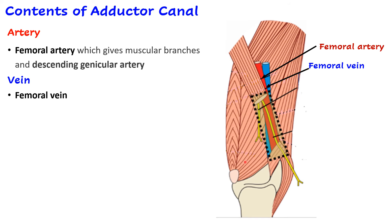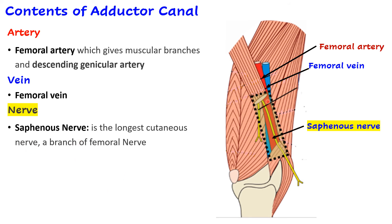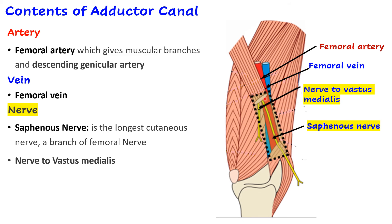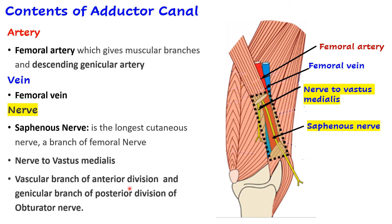The femoral vein also passes through the canal. Regarding nerves: the saphenous nerve — the longest cutaneous nerve, a branch of the posterior division of the femoral nerve — passes through. The nerve to vastus medialis supplies vastus medialis and the knee joint. There are also two branches from the obturator nerve: a vascular branch from the anterior division supplying the femoral artery, and a genicular branch from the posterior division supplying the knee joint. So in total, four nerves are present.